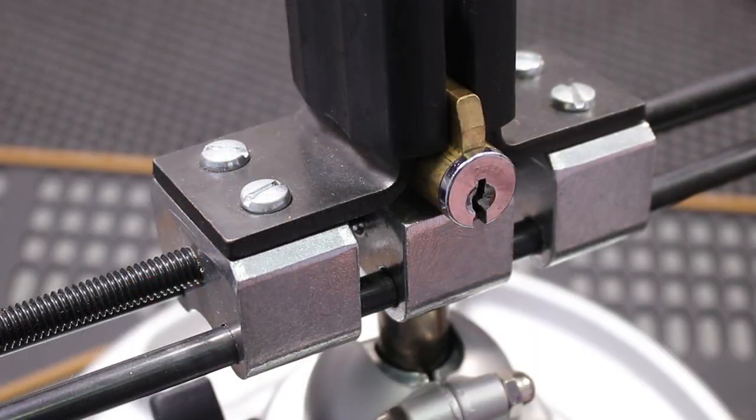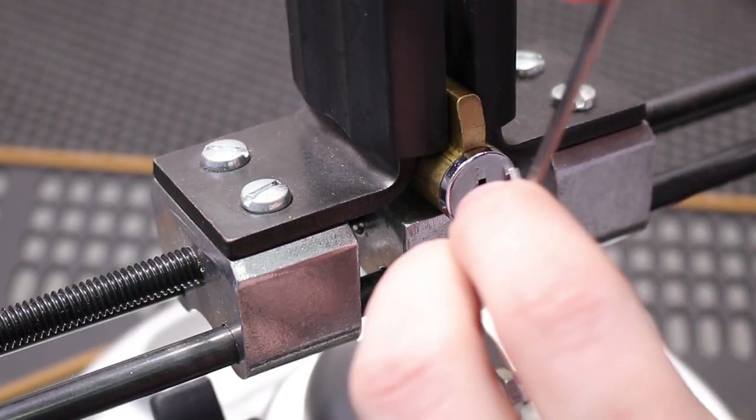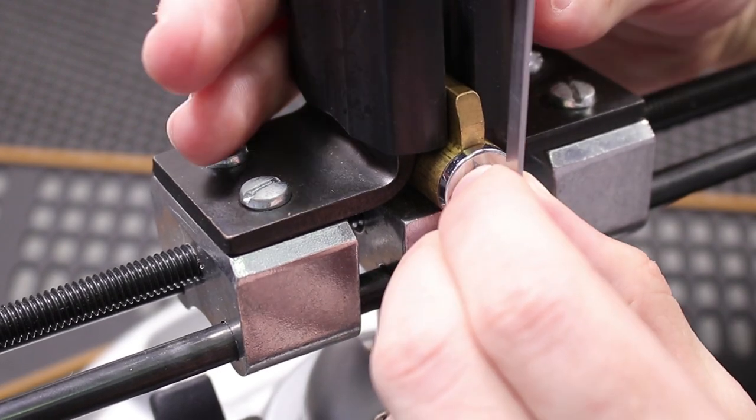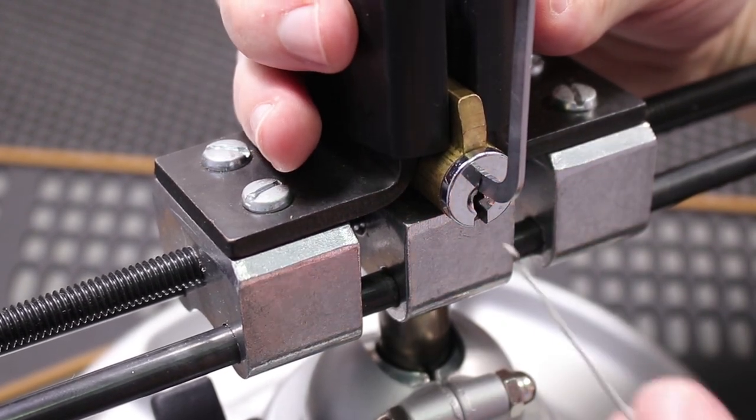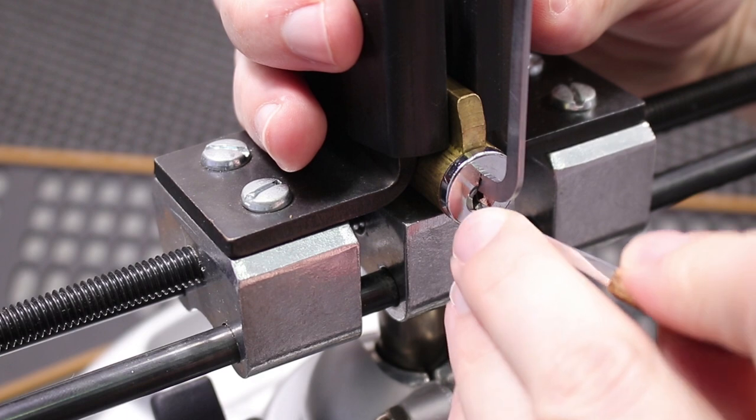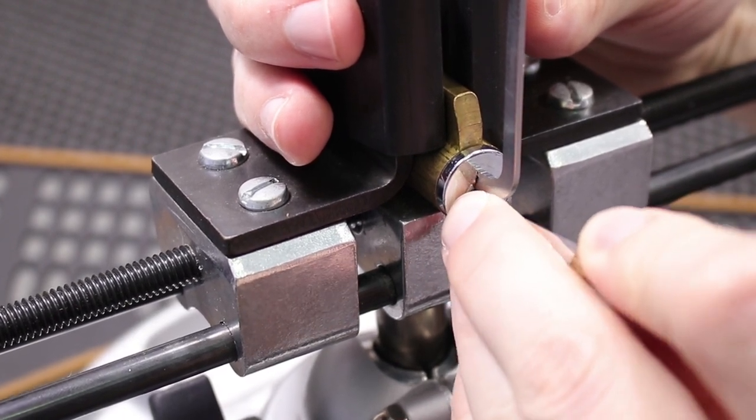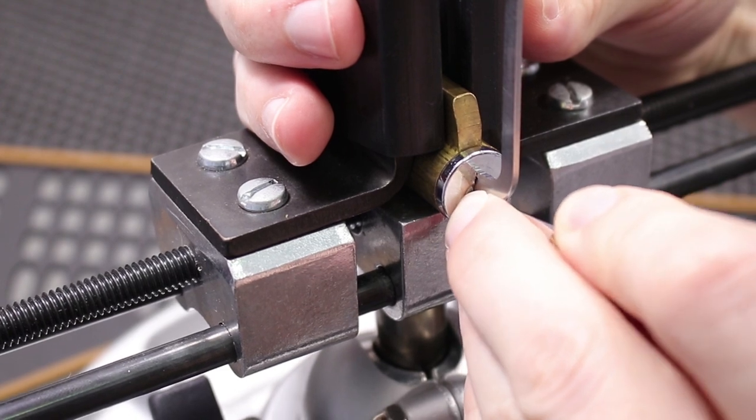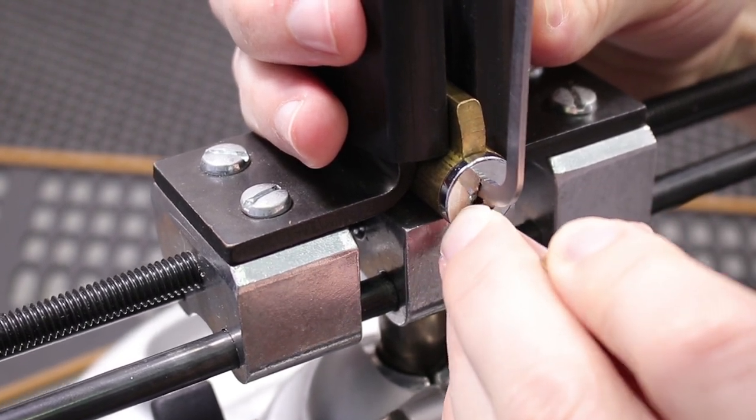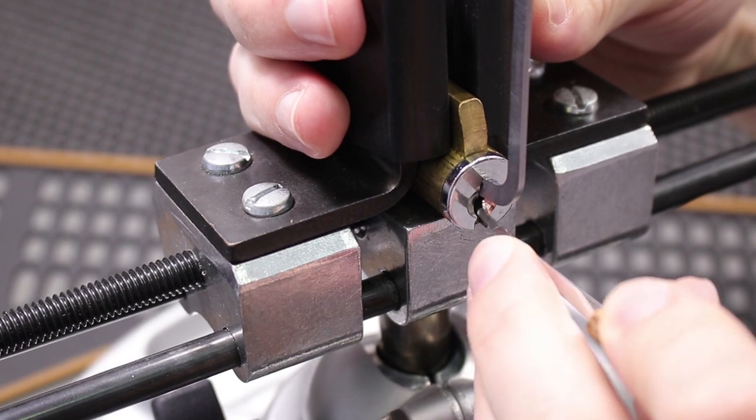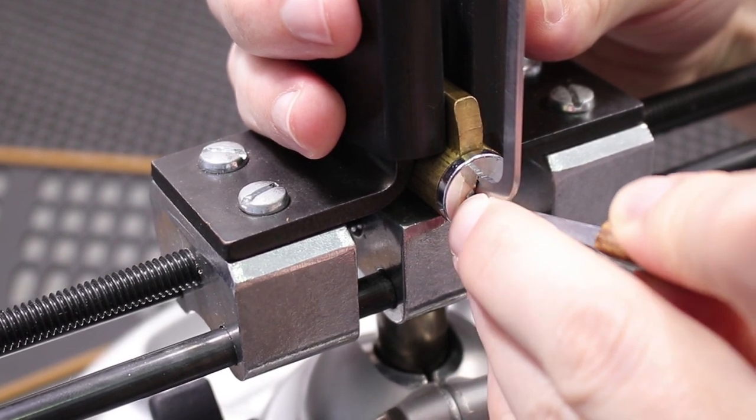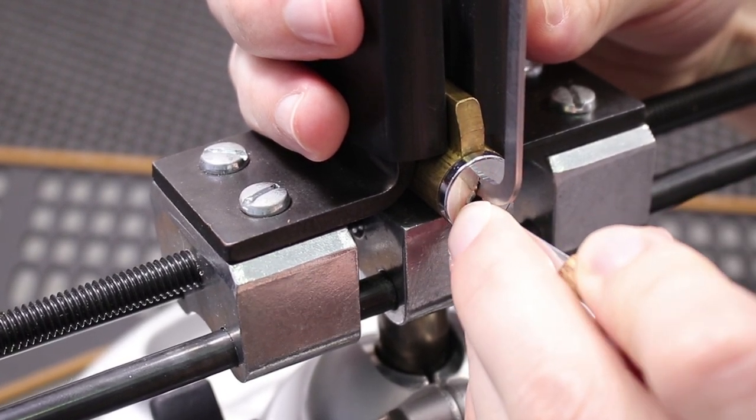Alright so what I'm going to do now is I'm going to pick this lock open and show you an example of using one of the plug spinners so you can see how quickly and effective it can be. So let's just get this lock open very quickly here. Let's go one, two, three, four, click on five, one, two, three.